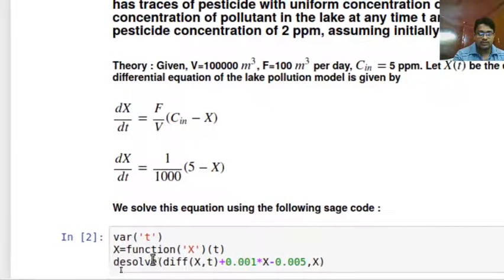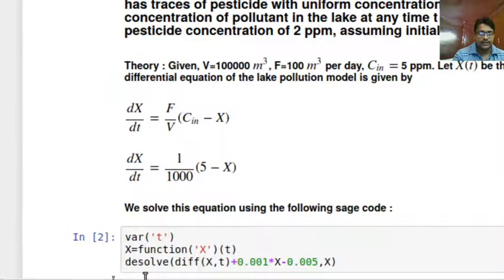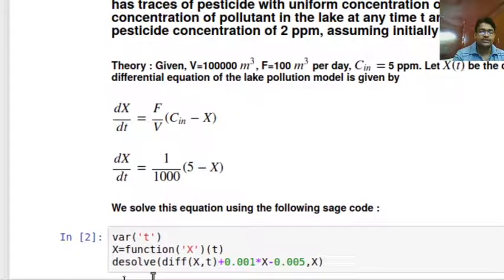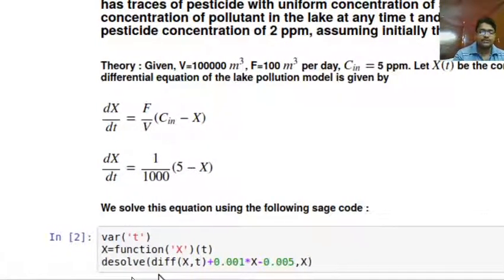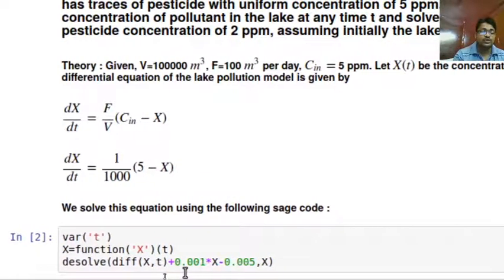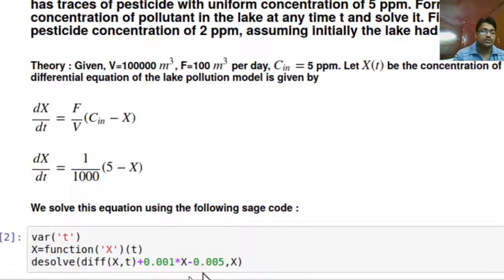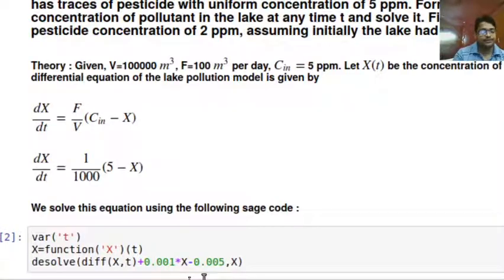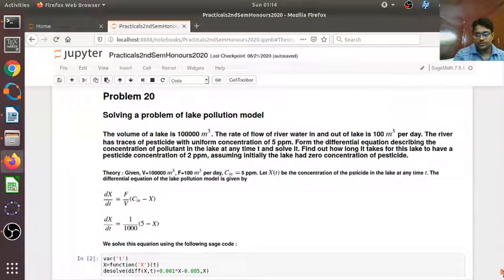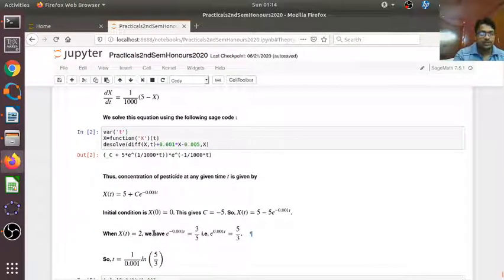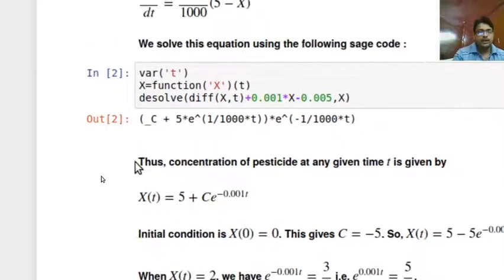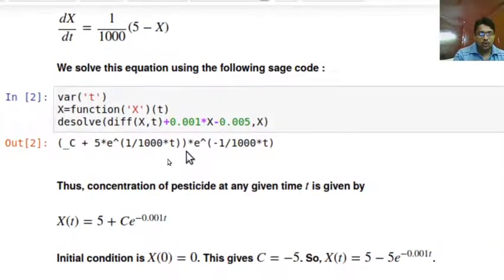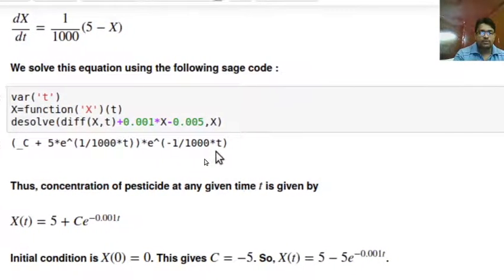We solve this using the following sage code which I have done several times. Variable t and X equal to function X(t), and we have to solve this: dsolve. We bring everything to the left hand side. So this is diff(X,t) plus 0.001*X minus 0.005, and comma X which is the dependent variable. Let us see how the solution is obtained. We obtain the solution as: C plus 5 times e to the power (1/1000*t) whole thing multiplied with e to the power minus 1/1000*t.